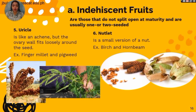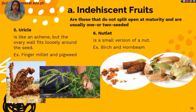The fifth indehiscent fruit is the utricle, which is like an achene, but the ovary wall fits loosely around the seeds. Examples are finger millet and pigweed. The sixth is the nutlet, which is a small version of a nut. Examples are birch and hornbeam.